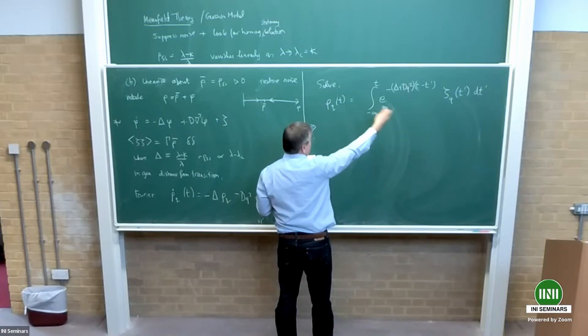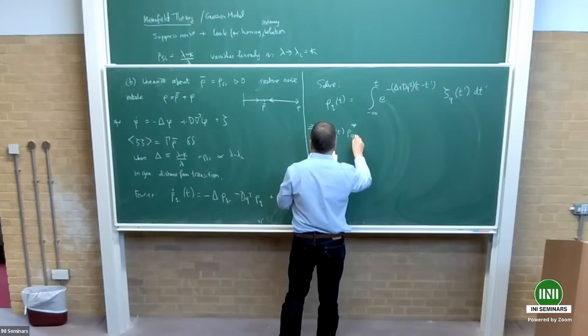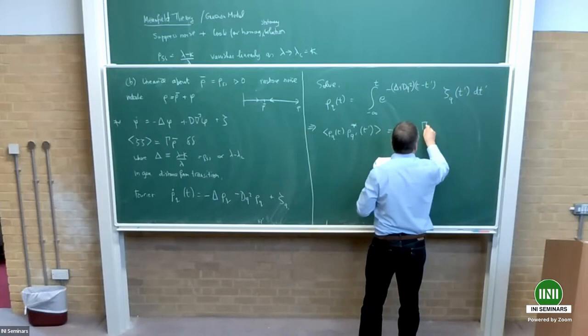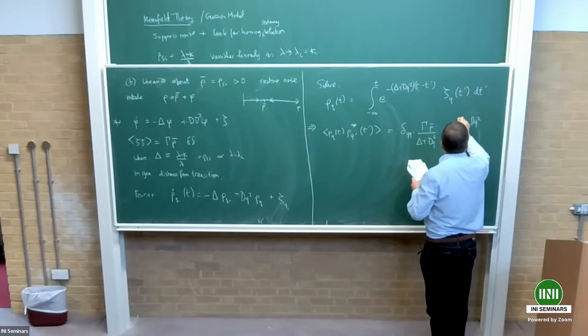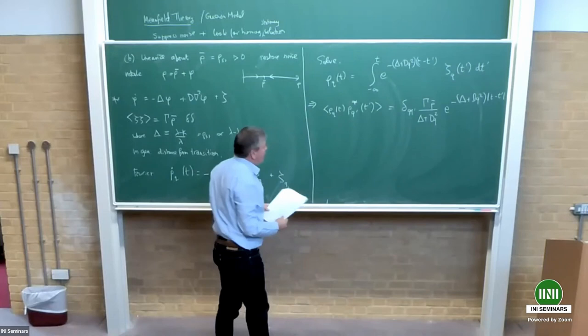Putting two solutions side by side and averaging, I get: langle rho_Q(T) rho_Q*(T') rangle equals a Kronecker delta in Q times gamma rho_bar over (delta plus D Q squared) times exp[minus(delta plus D Q squared)|T minus T'|]. That's the result of essentially squaring that equation and averaging it.